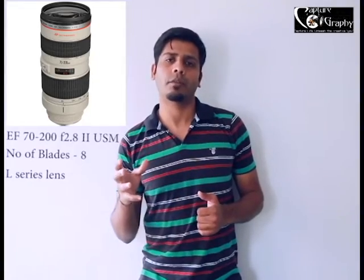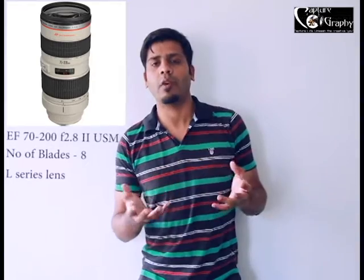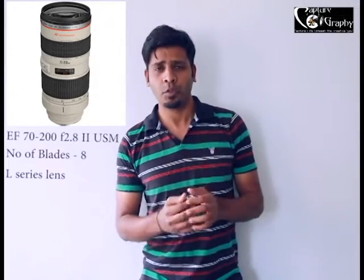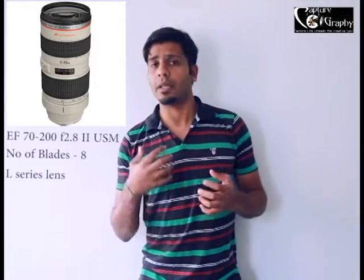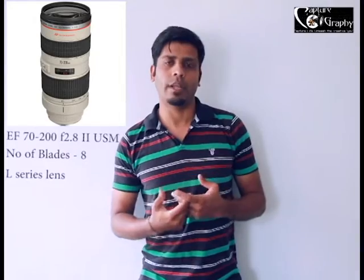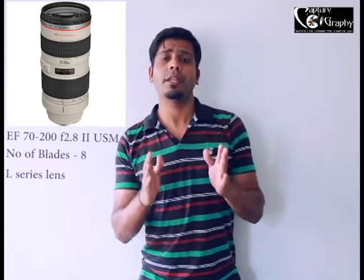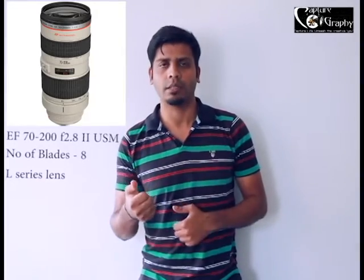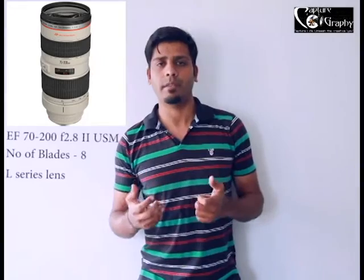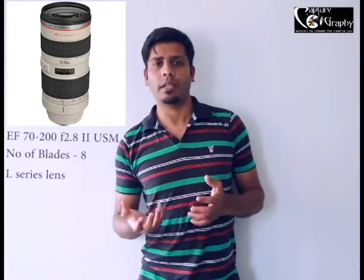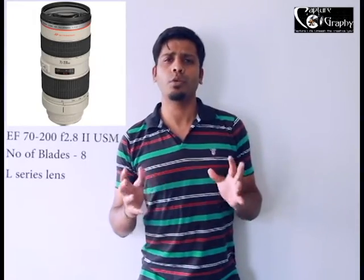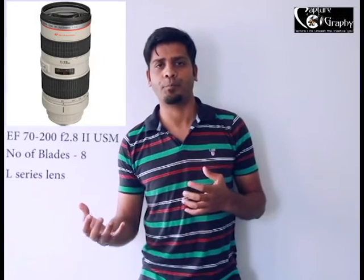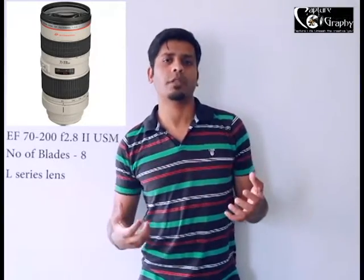This lens can also be used for mammal photography or wildlife. It cannot be used for bird photography considering birds are very small, making it very difficult to handle, but for mammal photography this lens is very suitable. The Canon 70-200mm f2.8 comes in two versions: IS1 and IS2, where IS stands for image stabilization. IS2 is the more recent release, and it will cost you approximately around 1.5 lakhs. Since it is an L series lens, it gives you very professional quality images.